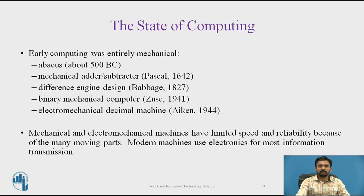Initially, man used simple mechanical devices like an abacus around 500 BC, knotted string, and the slide rule for computation. Early computing was entirely mechanical, like the mechanical adder-subtractor by Pascal since 1642, different engine designs by Babbage since 1827, then a binary mechanical computer since 1941, and electromechanical decimal machines since 1944. Mechanical and electromechanical machines had limited speed and reliability due to their many moving parts.